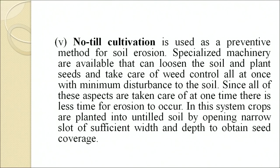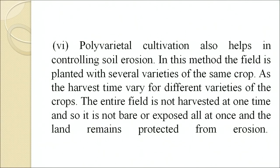No-till cultivation is used as a preventive method for soil erosion. Specialized machinery can loosen the soil and plant seeds while taking care of weeds, all at once with minimum disturbance of the soil. In this system, crops are planted into untilled soil by opening narrow slots of sufficient width and depth to obtain seed coverage. Polyvarietal cultivation also helps in controlling soil erosion — the field is planted with several varieties of the same crop, and since harvest times vary for different varieties, the entire field is not harvested at one time, so the land remains protected from erosion.